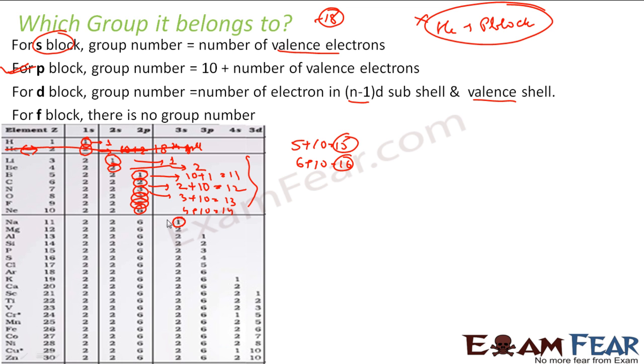Start with sodium. Sodium is again s. So we just use the first formula, number of valence electrons is 1. So it is first group. Magnesium, s block. So it will be second group. Why? Because 2 electrons, valence electrons.